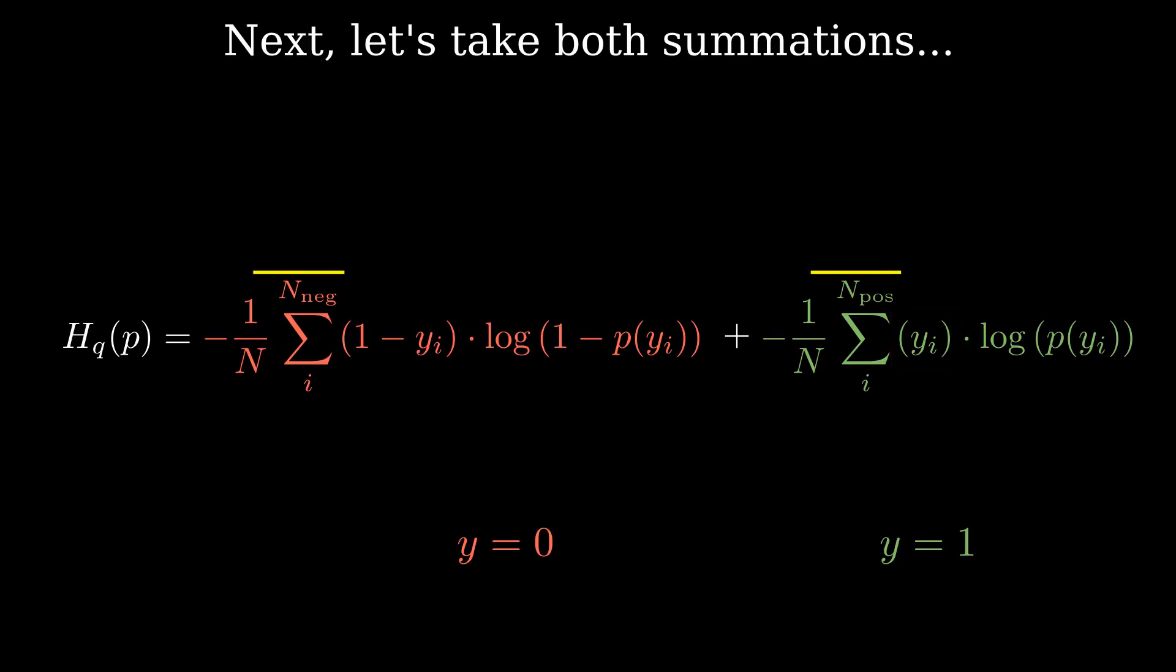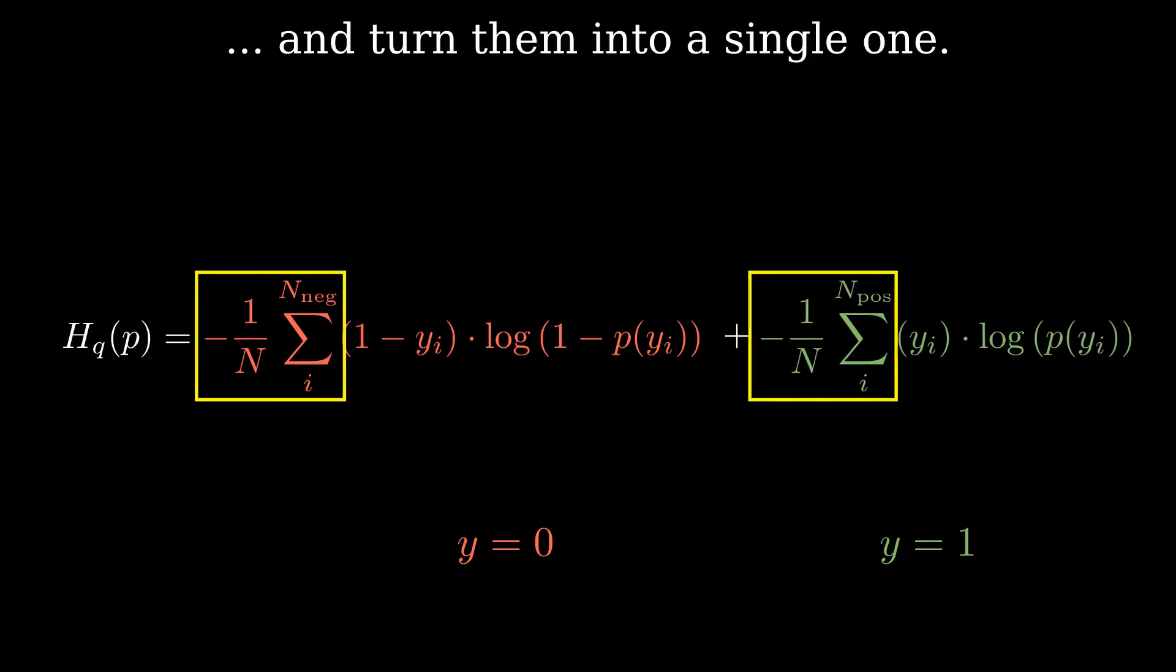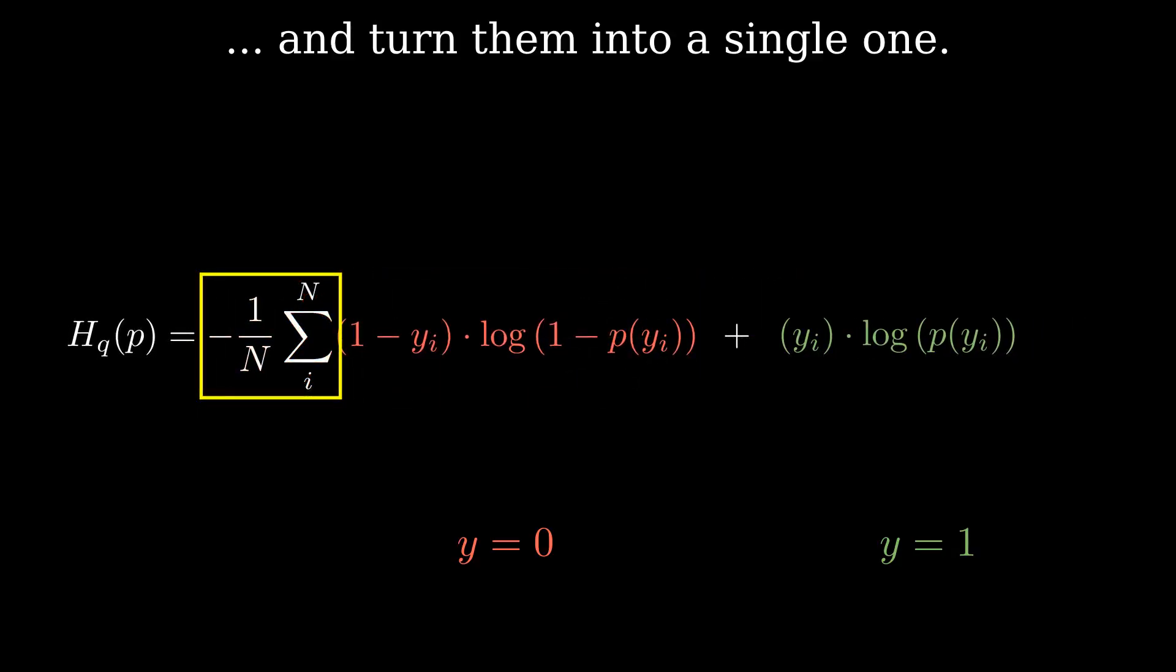Next, let's take both summations and turn them into a single one. Notice that this is only possible because, for each data point, only one term will have a non-zero value. For red points, the second term is always 0. For green points, it is the first one that is always 0.